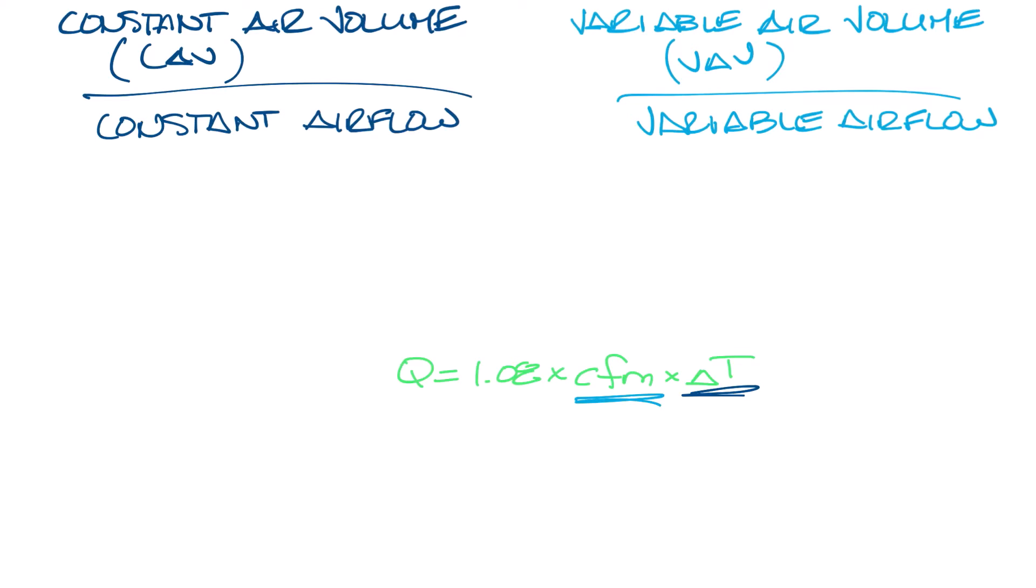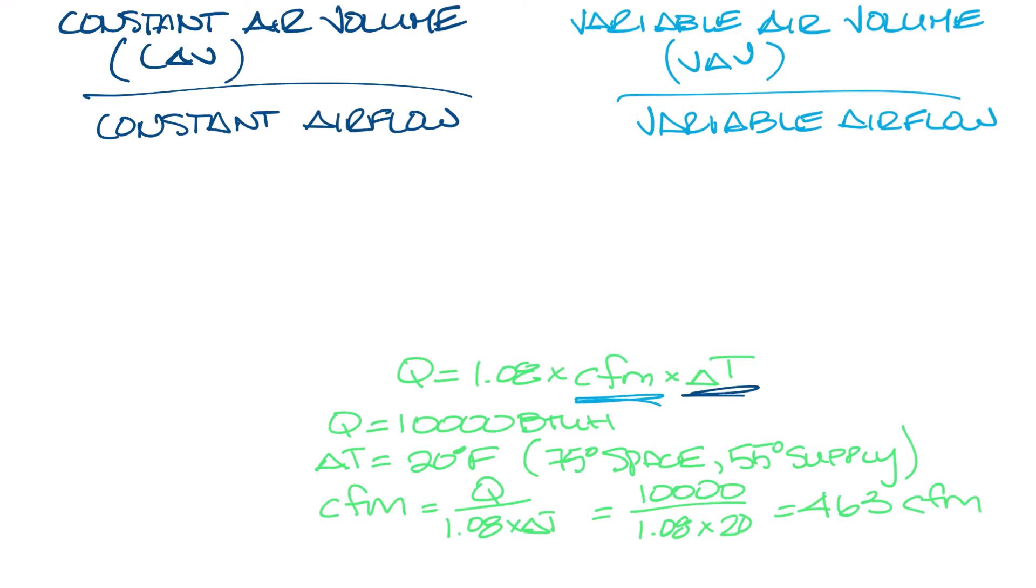So for easy math, let's say that we have a load in the space of 10,000 BTU. In a VAV system, delta T is typically 20 degrees Fahrenheit based on a 75 degree space temperature, which gives you a 55 degree supply air temperature. So now we can calculate how much CFM we need, where CFM equals Q 10,000 BTU divided by 1.08 times delta T. So that gives us 10,000 BTU divided by 1.08 times 20 gives us 463 CFM.